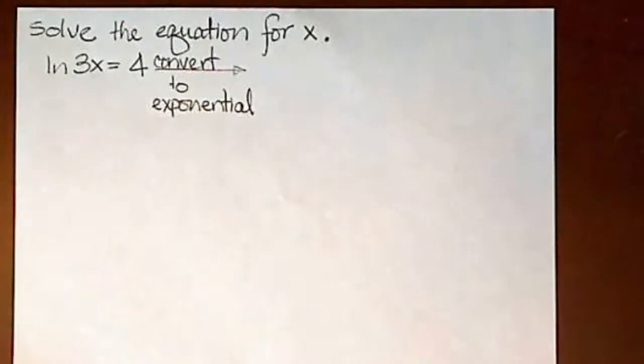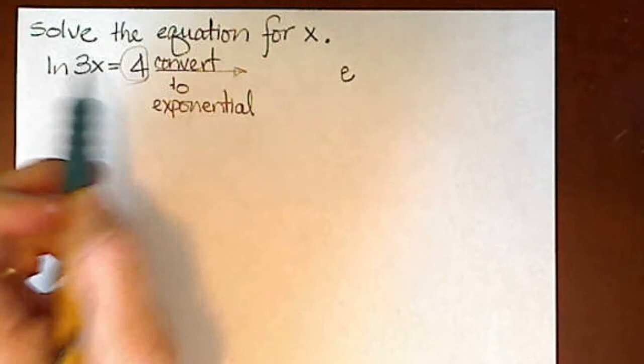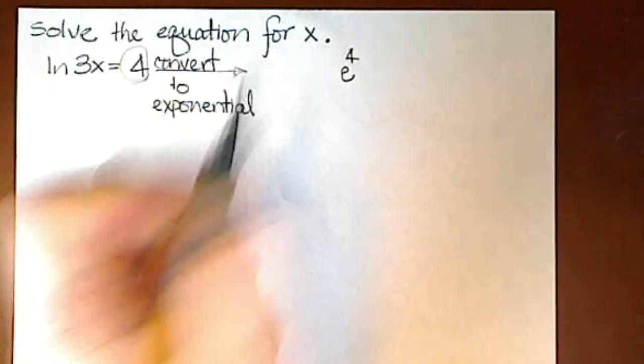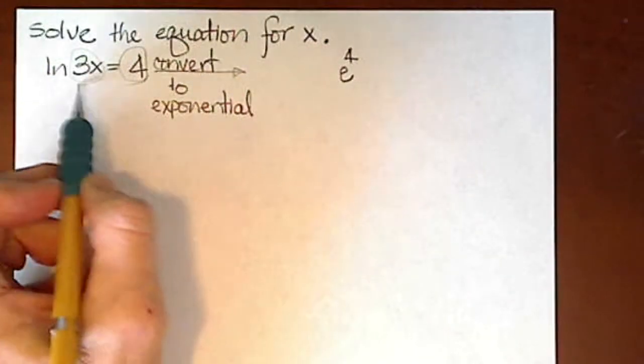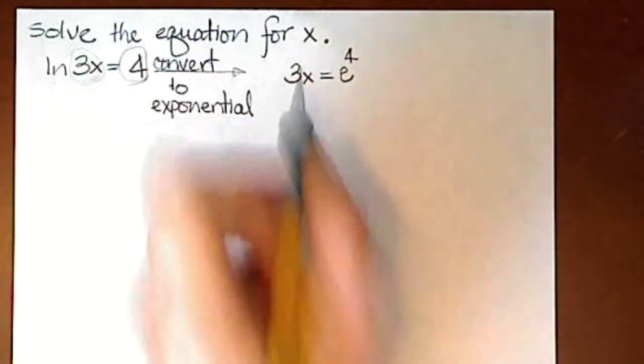We start with the base for natural log, which is e. The answer to a logarithmic problem is always the exponent of an exponential equation, and the argument becomes the answer of the exponential equation.